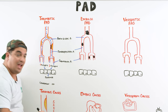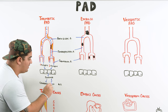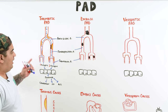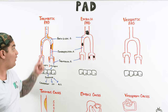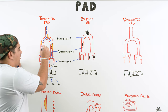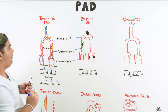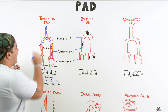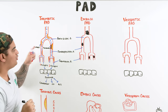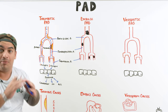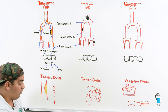A plaque can narrow the vessel significantly, and sometimes a thrombus forms on top of the plaque, which is even more dangerous. These are two distinct entities: an atherosclerotic plaque narrows the lumen, while a thrombus on top of a plaque can completely obliterate blood flow. The question is what causes the plaque to form — and the answer is atherosclerosis.